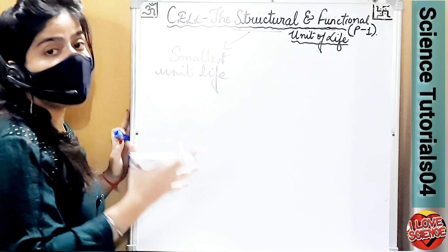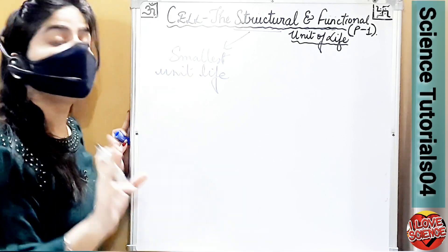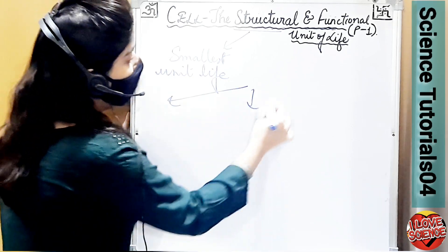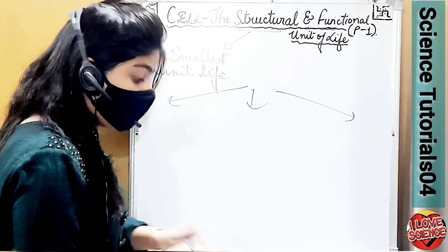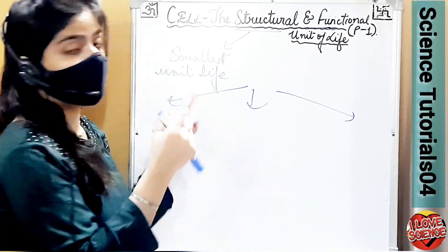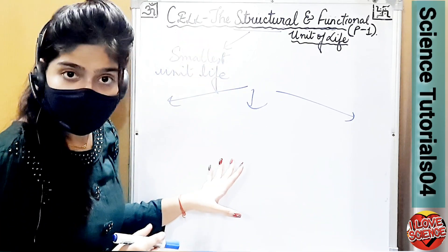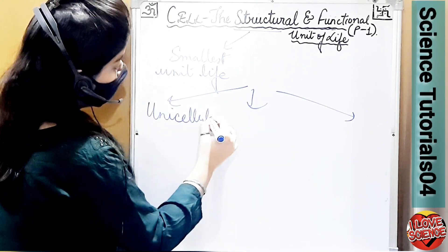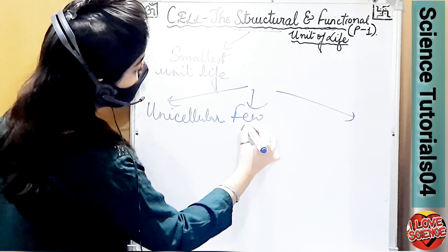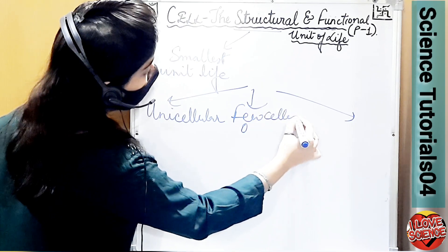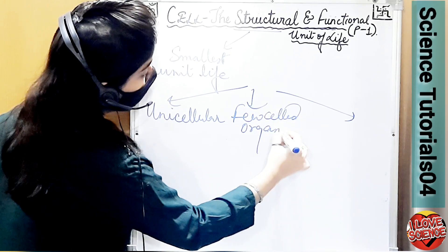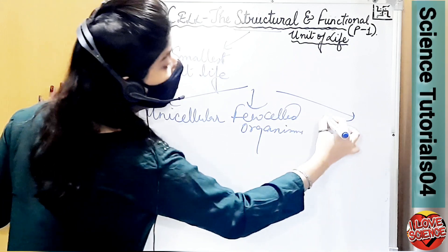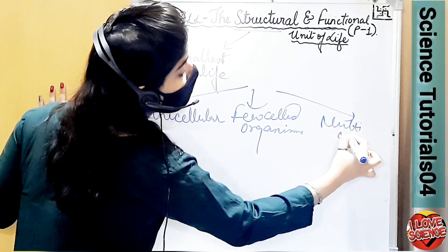On the basis of number of cells, there are three types: unicellular organisms, few-celled organisms, and multicellular organisms.